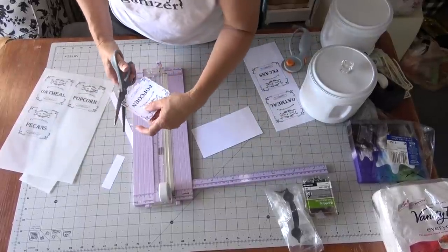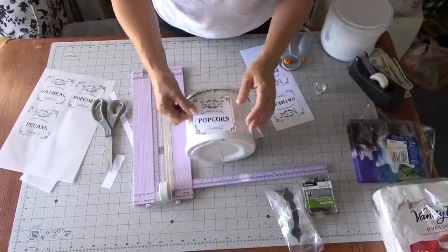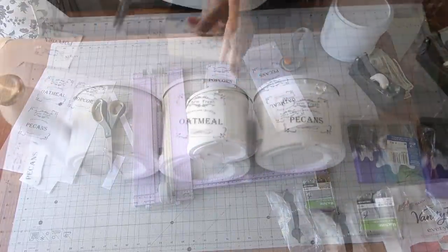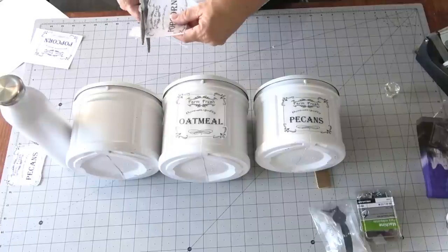So once I printed them all out, I just did a quick fussy cut around the actual printed portion, and I'm going to make sure I line them up and size them to my containers.